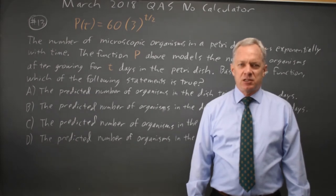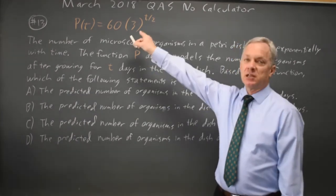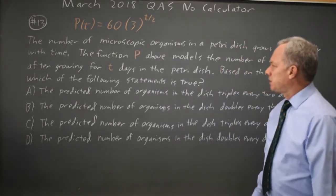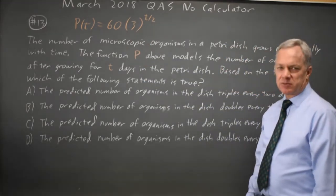This is question 13. College Board gives us an exponential equation, and they ask us to interpret the equation regarding the number of micro-organisms in a Petri dish.